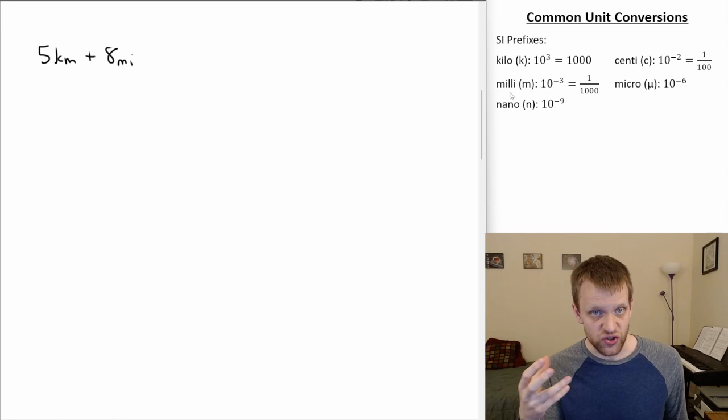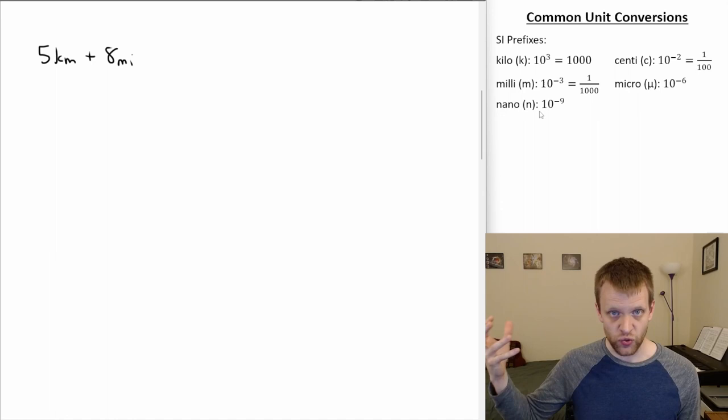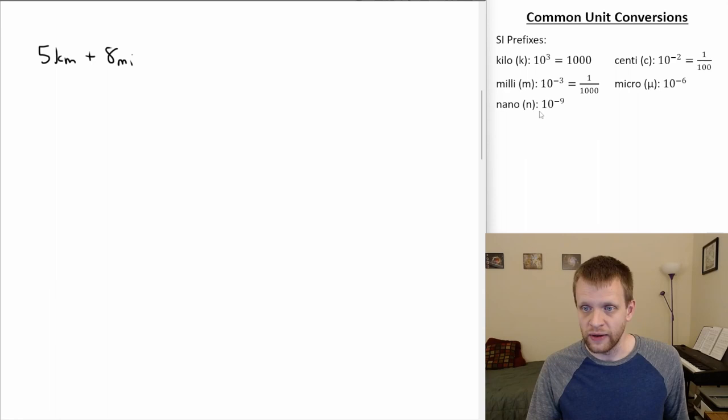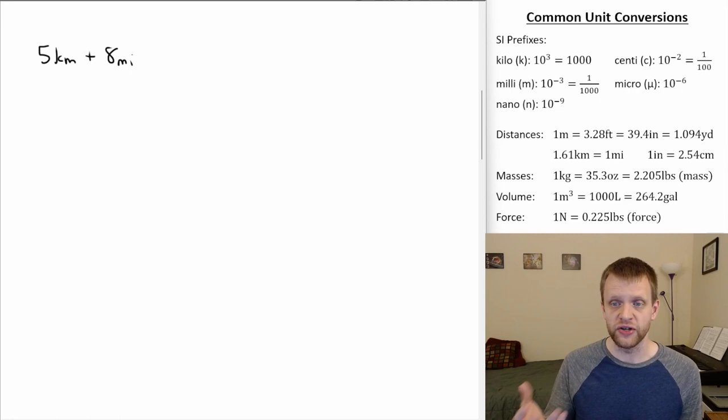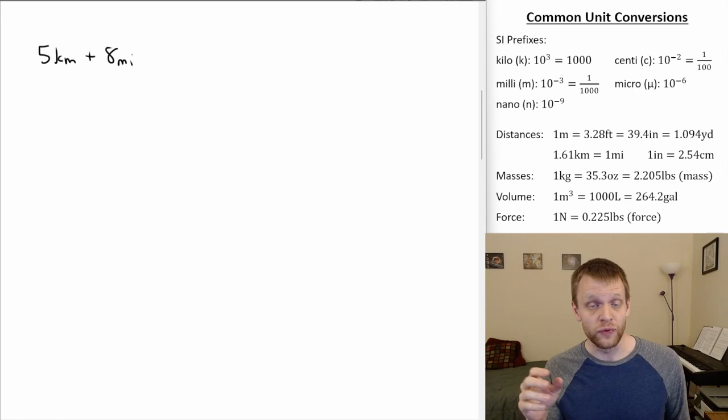There are lots of other SI prefixes — things like micro or nano getting smaller and smaller. Going the other direction, mega is 1,000,000 and giga is 1,000,000,000. There are also some other common unit conversions for certain types of quantities — converting certain distances, masses, volumes, and force. Time is on here as well; there are 60 minutes in an hour and 60 seconds in a minute.